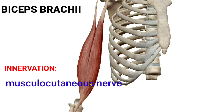The biceps brachii muscle is supplied by the musculocutaneous nerve, whose root value is C5, C6, and C7.